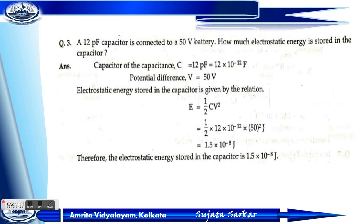Substituting values: E = ½ × 12×10⁻¹² × 50² = 1.5×10⁻⁸ joule. Therefore, the electrostatic energy stored in the capacitor is 1.5×10⁻⁸ joule. This is the answer.